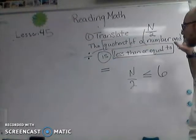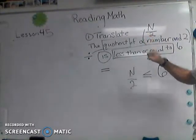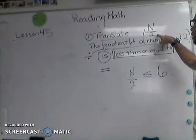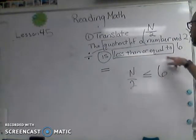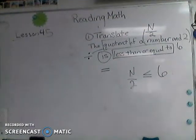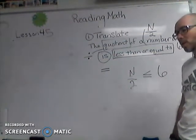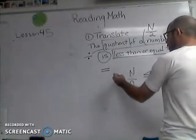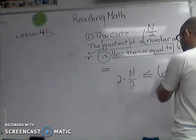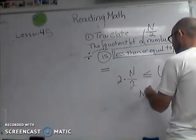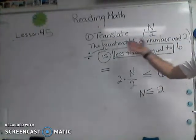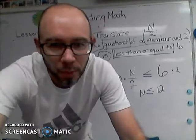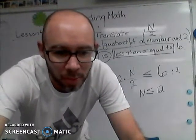Dice it up into pieces: 'quotient' means division — fraction. 'A number and two' gives us n over two. 'Less than or equal to' and six give us the inequality. Once we have n/2 ≤ 6, we can do the math: multiply both sides by two, and that number has to be less than or equal to twelve for this to be true. But for now they're mainly asking you to write the expression.